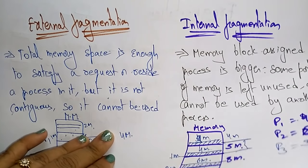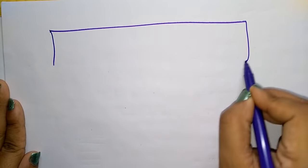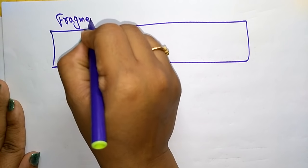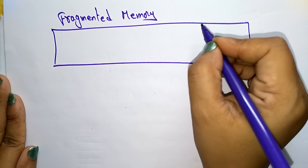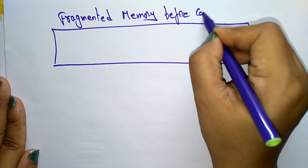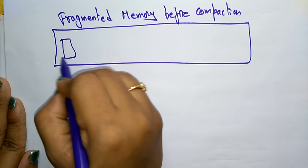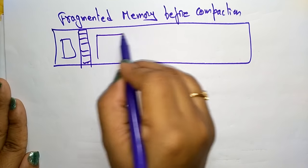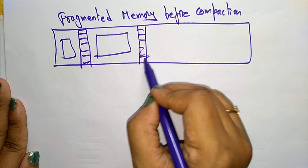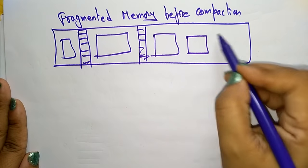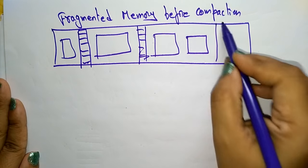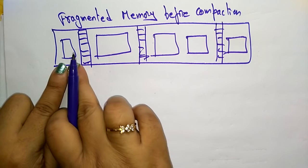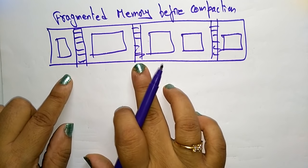To overcome fragmentation, the fragmented memory can be compacted — means shuffled. Before compaction, the memory looks like this: there are used blocks and unused areas scattered. After compaction, whatever the unused area is there, it will be moved to the last. So one process, next process, next process — and then completely unused space combined together. We are shuffling all the unused partitions to make one big partition.